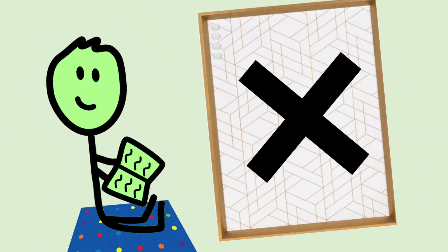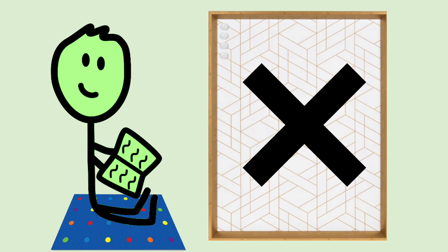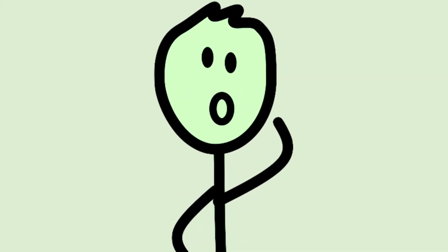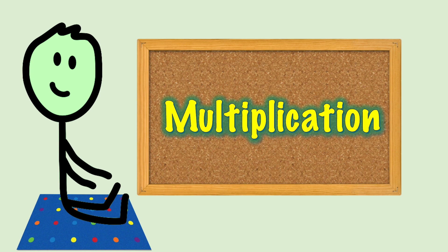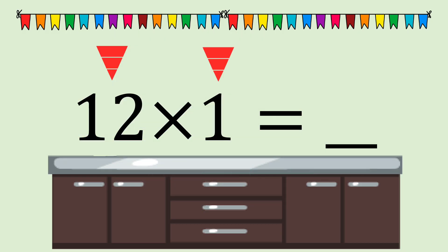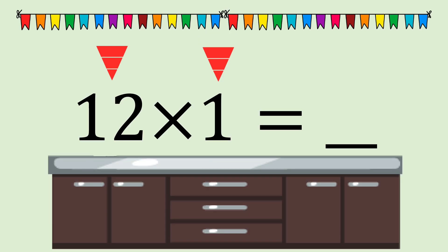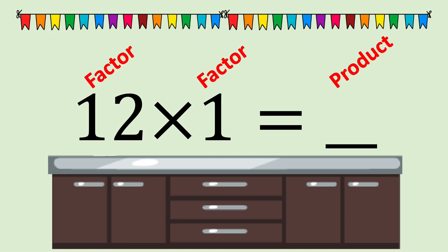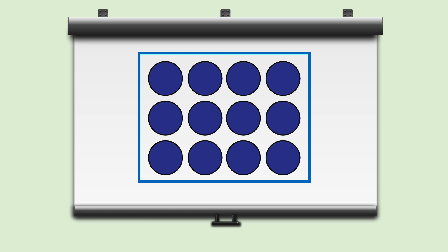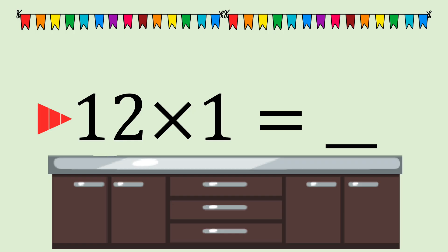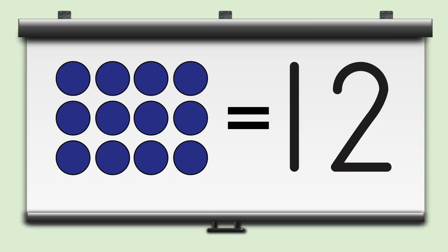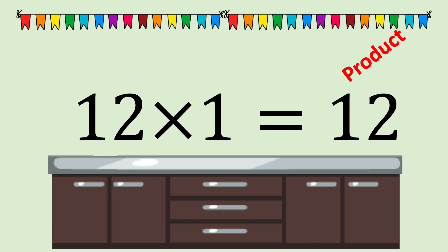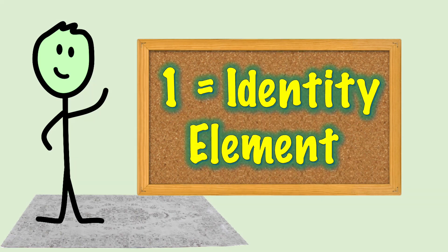Multiplication also has an identity property. It works a little differently from addition and subtraction, though. Here's a multiplication number sentence: twelve times one equals blank. Remember, the numbers we multiply together are called factors, and the answer is called the product. Multiplication involves adding equal groups. Twelve times one tells us we have one group of twelve. One group of twelve is twelve. Our product is twelve. One is the identity element in multiplication.